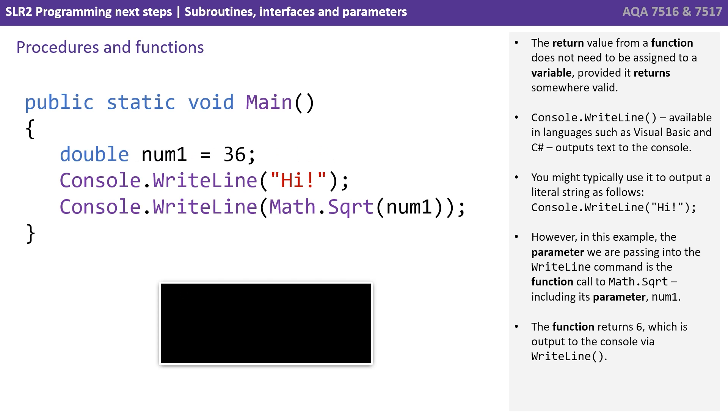However, in this example, the parameter we're passing into the write line command is the function itself, math dot SQRT, including its parameter num1. The function returns six, which is output via the write line command.